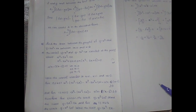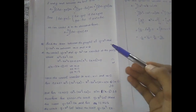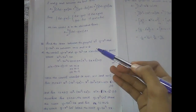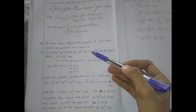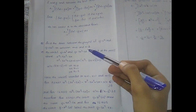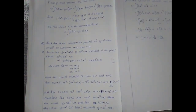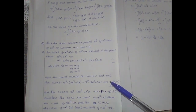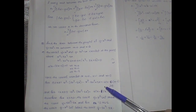The next example problem is: find the area between the graphs of y = x³ and y = 3x² minus 2x, between x = 0 and x = 2. First, we find the intersecting points by setting x³ equal to 3x² minus 2x.